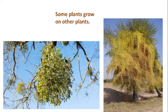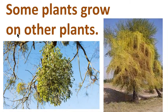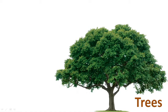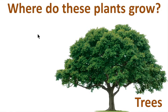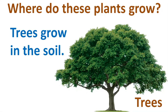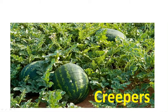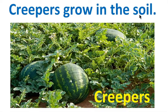Here we can see some plants grow on other plants. Some plants grow on other plants — and here is a big tree. Where do these plants grow? Trees grow in the soil. Creepers also grow in the soil — this is a watermelon plant and it is a creeper, so creepers grow in the soil.